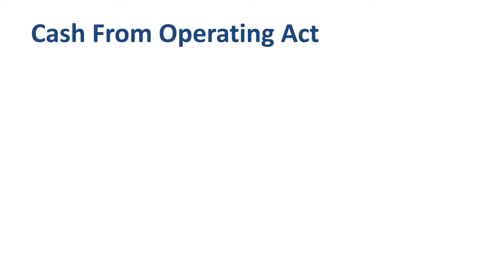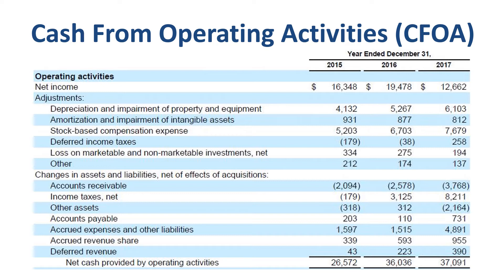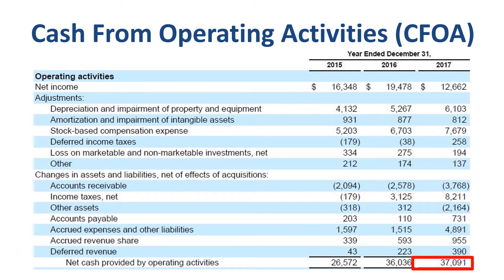First up: cash from operating activities, or CFOA. Alphabet Inc., like most other companies, presents CFOA using the indirect method of cash flow reporting, which means you start with net income and then make adjustments to get to cash flow. Specifically in 2017, from $12.7 billion net income to $37.1 billion CFOA. The difference between net income and CFOA is more than $24 billion in 2017, while it was around $17 billion in 2016 and $10 billion in 2015. Let's pick the five biggest line items in 2017 to see how this indirect method works.